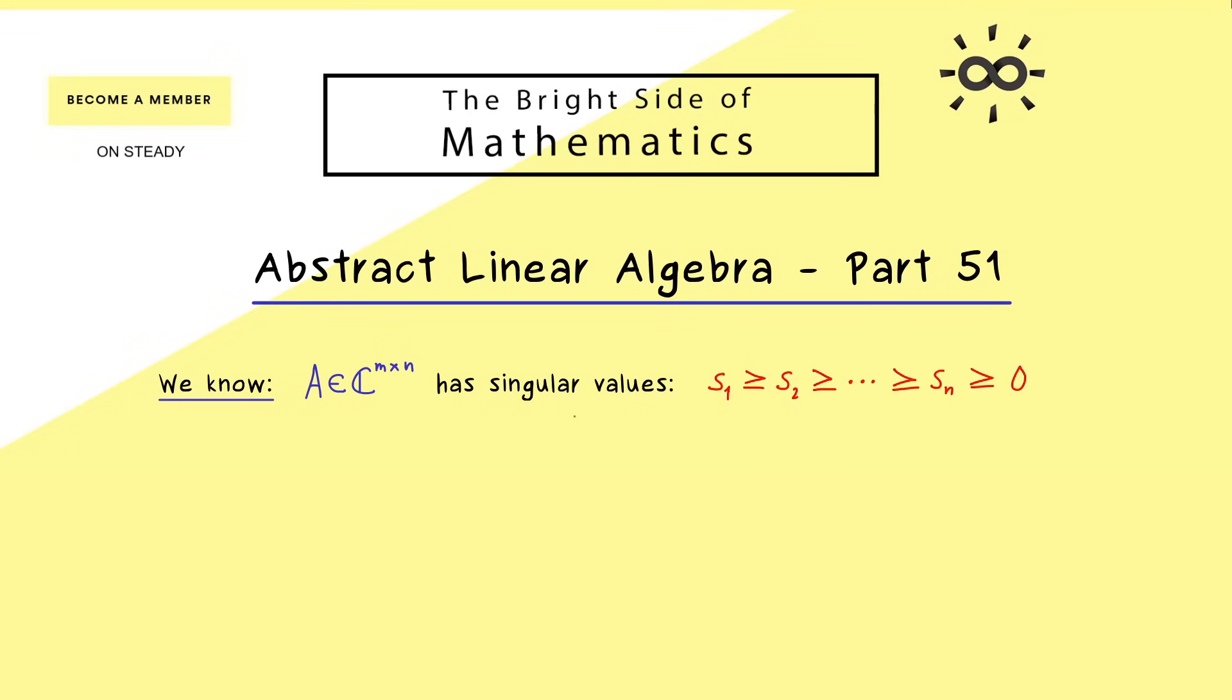We know that because they are connected to eigenvalues of a square matrix. More precisely, they come from the self-adjoint matrix A star A. In fact, one can easily show that these eigenvalues have to be non-negative, which means we can also take the square root of them. And then by definition, these are exactly the singular values of the matrix A.